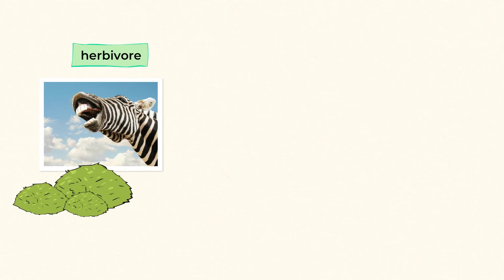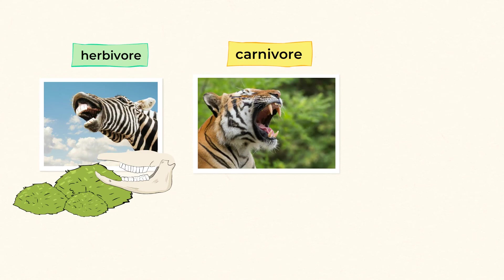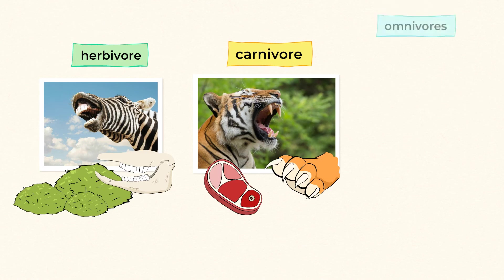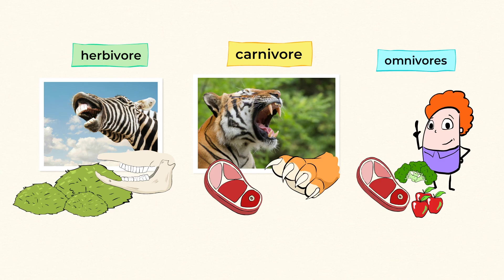Herbivores get their energy from plants, so they need to have flat teeth for grinding them. Carnivores are hunters, and many of them have sharp teeth and claws to catch and eat their prey. Then we have the omnivores, who will eat a lot of different types of food, both plants and meat.